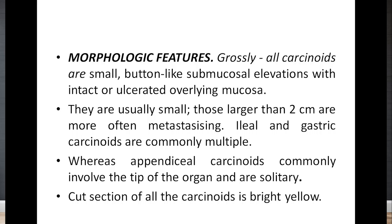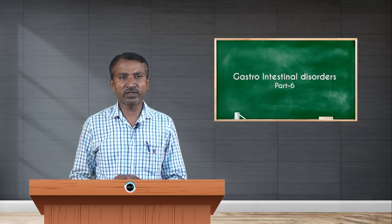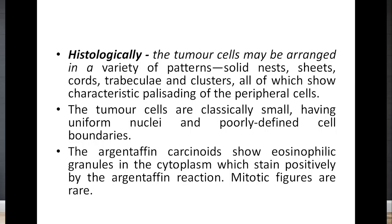Morphological features: grossly, all carcinoids are small, button-like submucosal elevations with intact or ulcerated overlying mucosa. They are usually small; those larger than two centimeters are more often metastasizing. Ileal and gastric carcinoids are commonly multiple, whereas appendiceal carcinoids commonly involve the tip of the organ and are solitary. The cut section of all carcinoids is bright yellow in color.